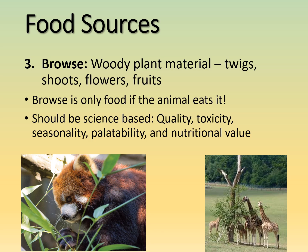Browse — woody plant material such as twigs, shoots, flowers, and fruits — is a common food source for browsers and intermediate feeders. It only counts nutritionally if the animal actually eats it, so palatability matters. Feeding browse should be science-based, considering quality, toxicity, seasonality, and nutritional value.